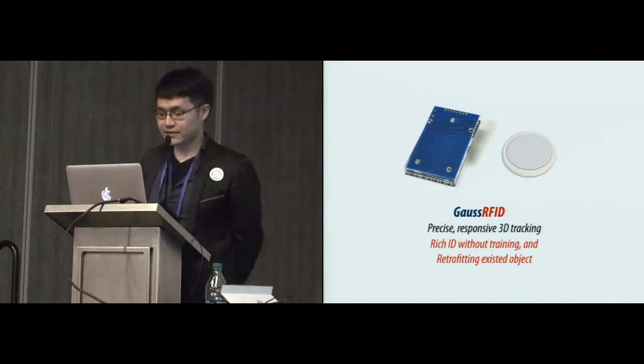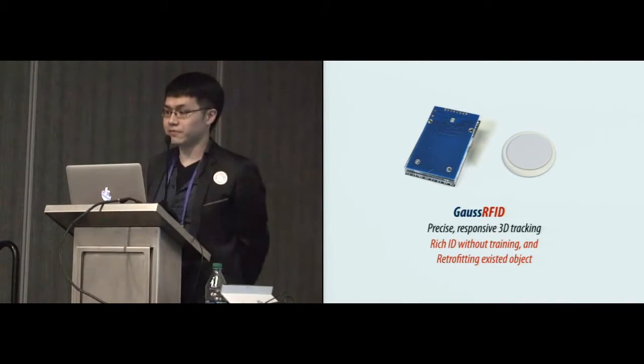For example, we combine Gaussense and RFID reader. And also, we combine a magnetic unit and an RFID tag. Then, the combination takes the advantage of both technologies.